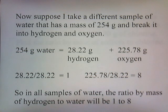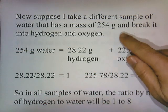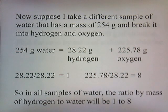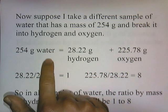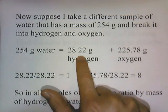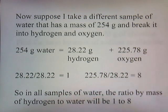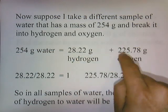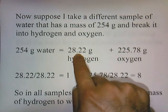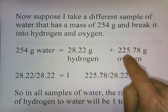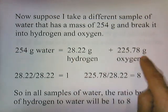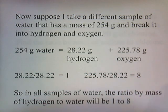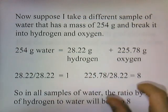Now suppose I take a different sample of water with a mass of 254 grams. We take this second, heavier sample and break it apart into hydrogen and oxygen. 254 grams of water will give you 28.22 grams of hydrogen and 225.78 grams of oxygen. 28.22 is the smallest number between these two, so 28.22 divided by itself is 1. And then 225.78 divided by 28.22 gives me 8. In this completely different sample, the ratio of hydrogen to oxygen by mass is 1 to 8.